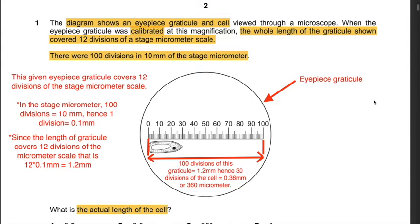Since the given eyepiece graticule covers 12 divisions of the stage micrometer scale, 12 × 0.1 mm = 1.2 mm. That means 100 divisions of the eyepiece graticule equals 1.2 mm. Since the cell only covers 30 divisions of this graticule, that will be 0.36 mm, or in other words 360 micrometers. You do the ratio: 30/100 × 1.2 = 0.36. Hence the answer is C, 360 micrometers.